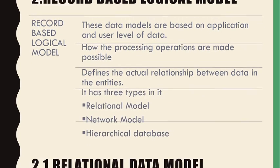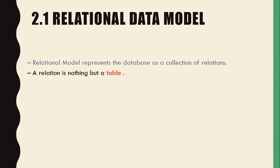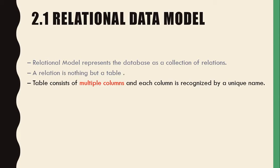Record-based models have three types: relational model, network model, and hierarchical model. In a relational data model, the database is represented as a collection of relations, which is nothing but a table format. For example, a student record may contain a name and address. This information is stored in a tabular form where the table contains multiple columns and each column is recognized by a unique name, such as student number, student name, and student address.